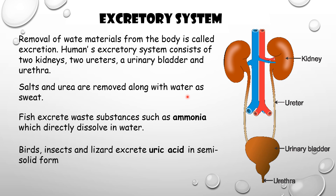Salts and urea are removed along with water as sweat. Fish excrete waste substances such as ammonia, which directly dissolves in water from their body. Birds, insects, and lizards excrete uric acid in semi-solid form. So different animals have different excretory waste substances.